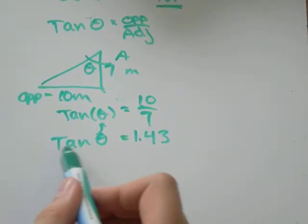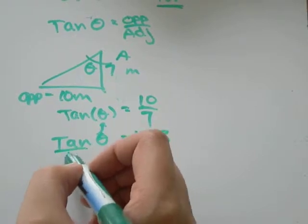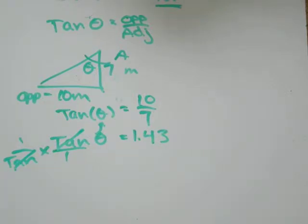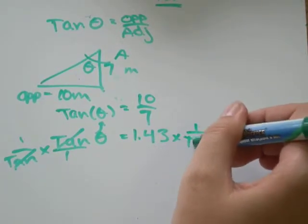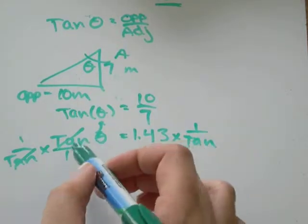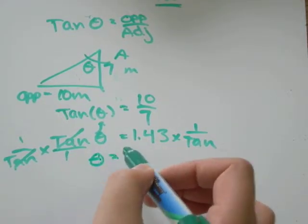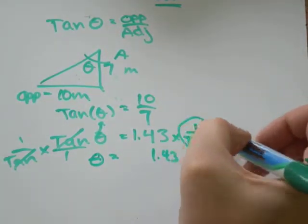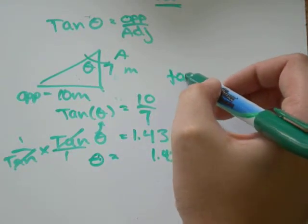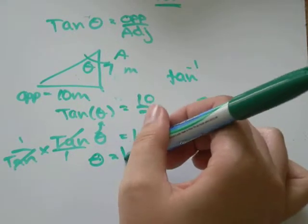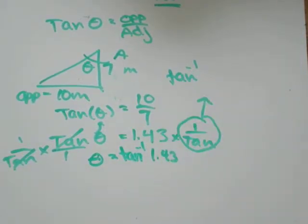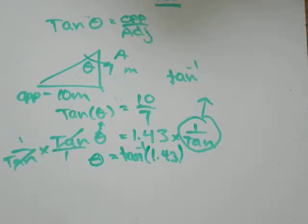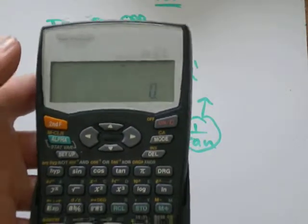So, to get theta by itself, I need to separate it from the tan. Think of that as tan over 1. If I multiply it by 1 over tan, my tans would cancel out. What you do to one side, you need to do to the other. If my tans cancel out, I'll be left with theta. And I'll be left over here with 1.43 times 1 over tan. 1 over tan, think of that as being equivalent to tan negative 1. And you just want to write tan negative 1 in front of the number, whatever the decimal was.